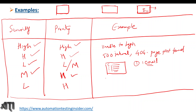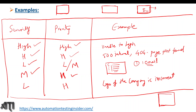Now let's talk about low severity and high priority. An example is if the company logo is incorrect. The logo represents the company, so it is a high priority defect, but low severity because it has no impact on the application's functionality. Another example: if per business requirements the logo should be on the right side but the developer placed it on the left side — that is another example of high priority and low severity.